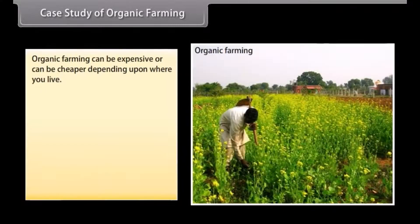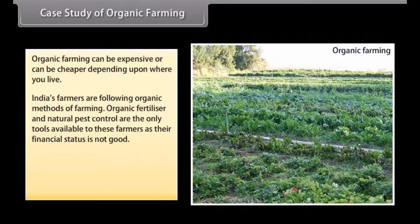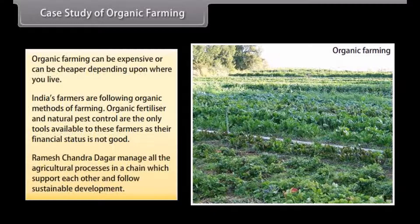Case study of organic farming: Organic farming can be expensive or cheaper depending on where you live. India's farmers are following organic methods of farming. Organic fertilizer and natural pest control are the only tools available to these farmers due to their limited financial status. Ramesh Chandra Dagar manages all agricultural processes in a chain that supports sustainable development.